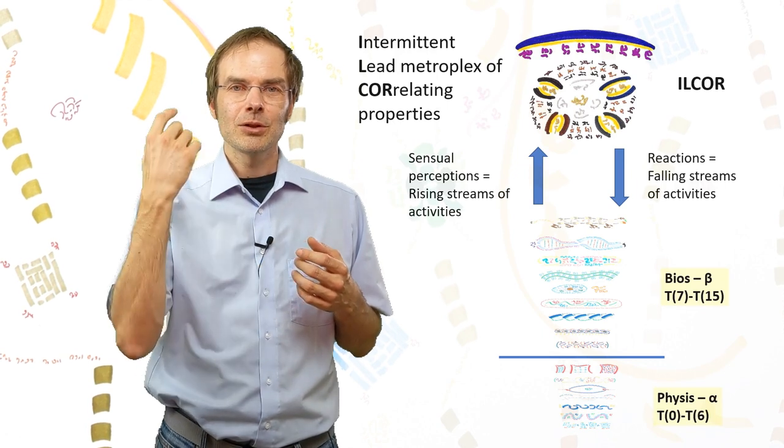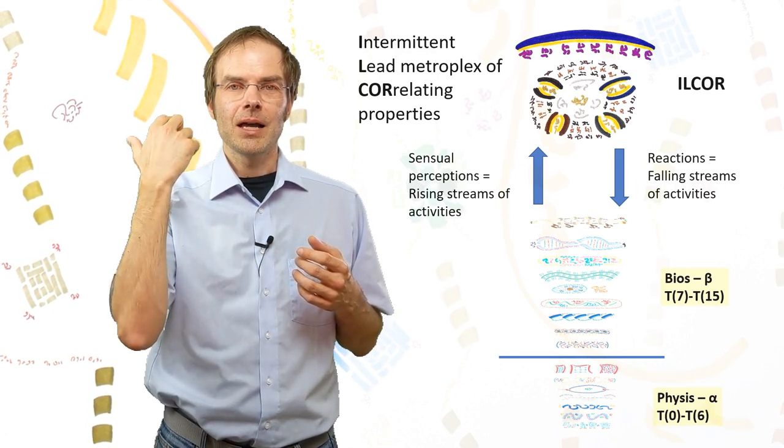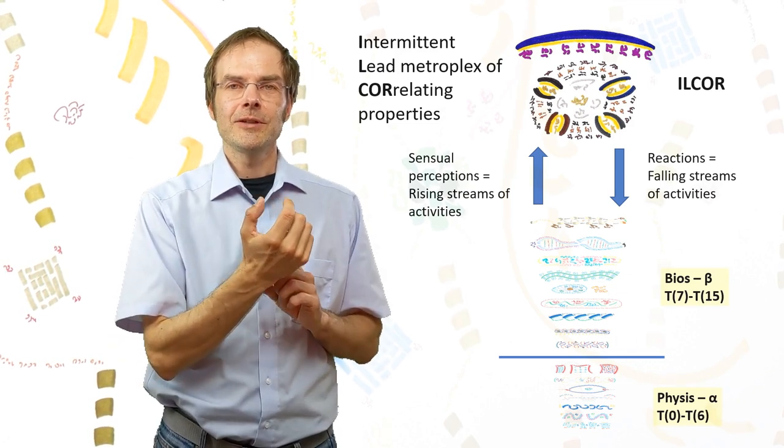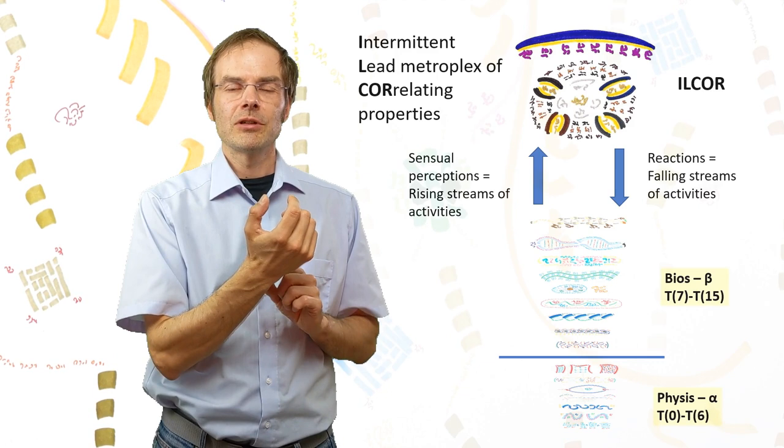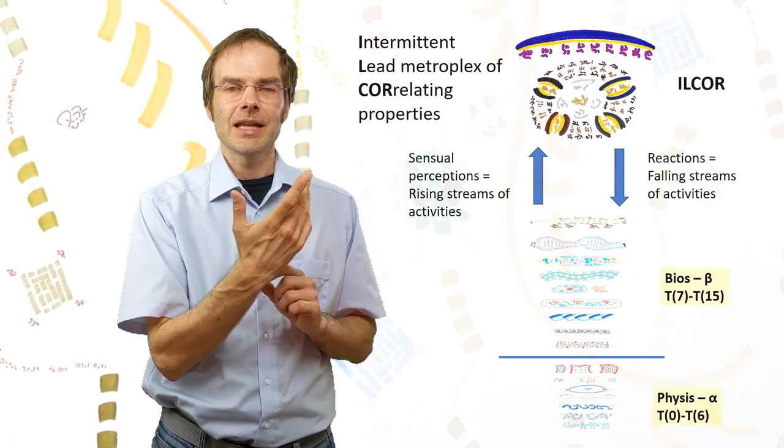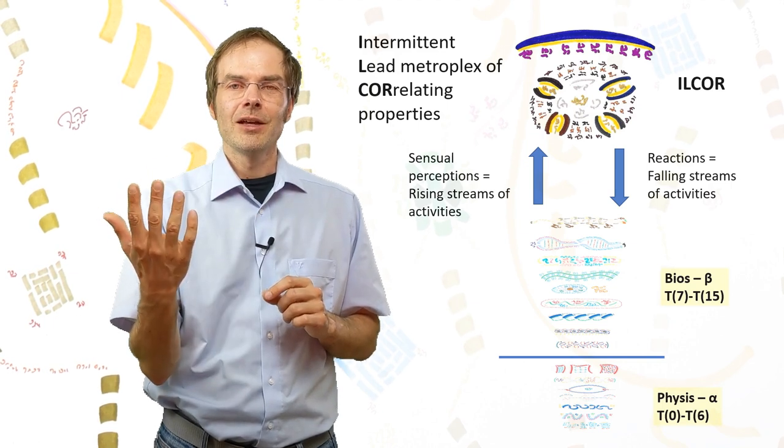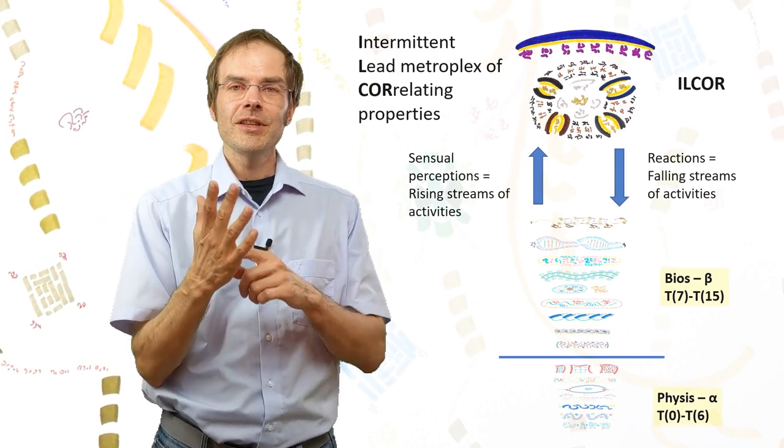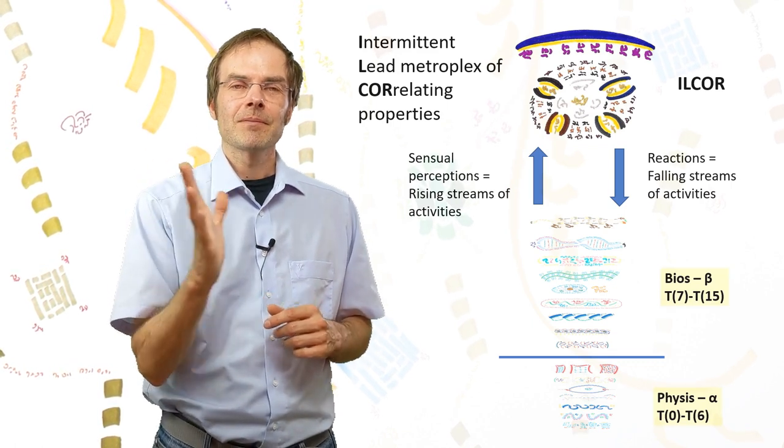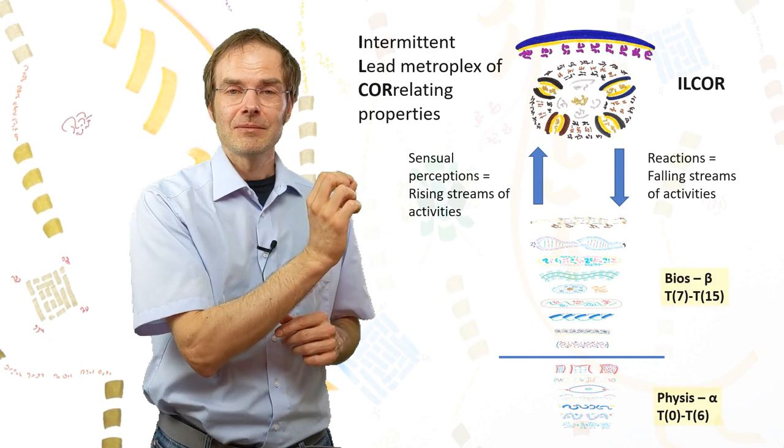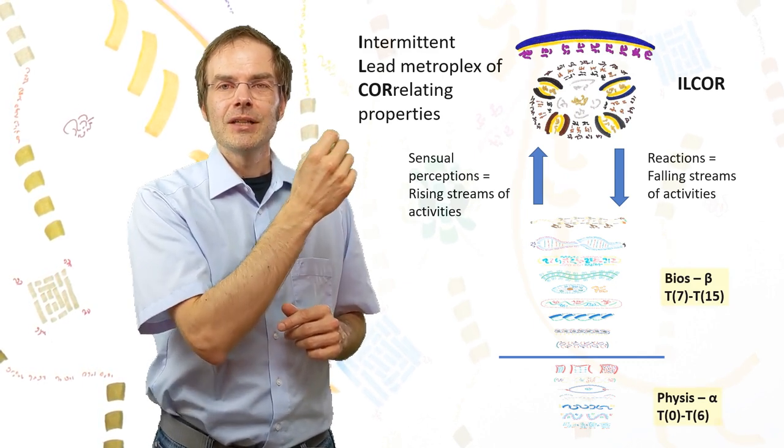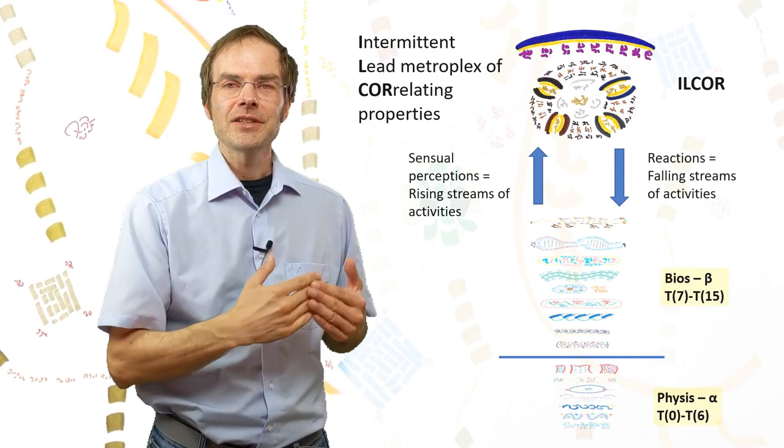And this goes into my motoric nerves, into my muscle cells, into the individual fibrinogenes, into the individual proteins that enact the movement. And the whole thing moves in a coordinated way. All the singular atoms, all the single atoms in my hand move in a coordinated way into that direction, without any failure. And this corresponds to a decreasing stream, a descending stream of activities.